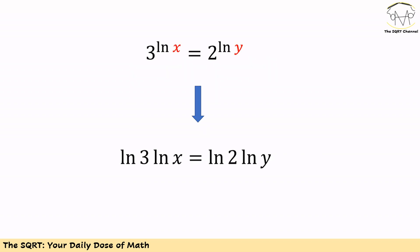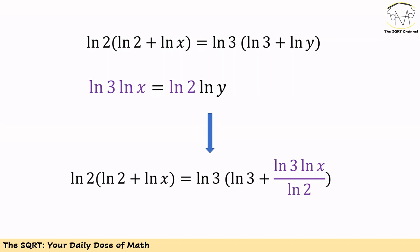Now let's talk about the second equation. We have 3 to the power of ln x equals 2 to the power of ln y. Again we are going to take ln from both sides, then we have ln x times ln 3 equals ln y times ln 2. We are going to find ln y from the second equation and put it in the first equation.